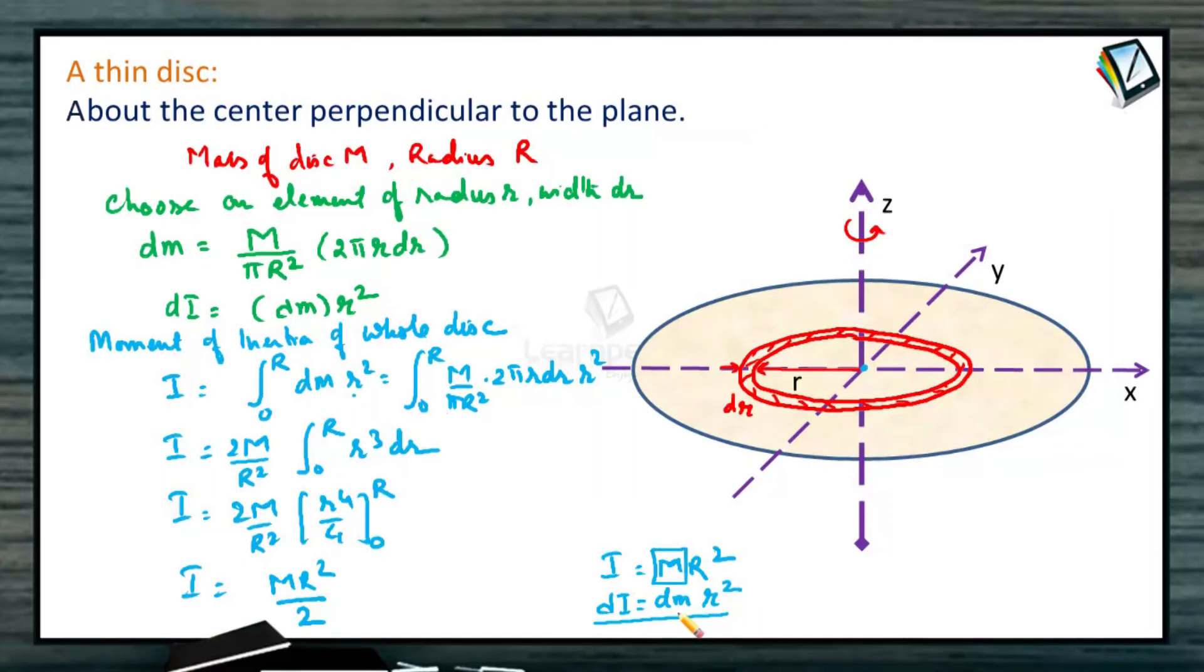Now first we calculated the value of dm. dm will be mass by area into the area of the ring: m by pi R square into 2 pi r dr. Substituting value of I, integration 0 to R dm r square: m by pi R square 2 pi r dr into r square. So we get, after integrating and substituting the limit, moment of inertia of the disk is I is equal to mR square by 2.